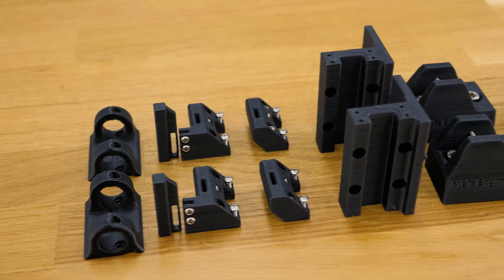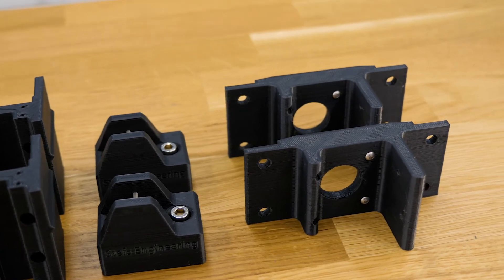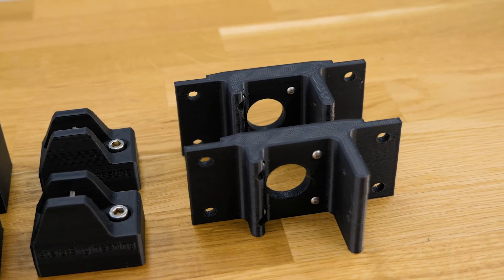Now first we are going to assemble the guide rail car blocks, the motor mounts and the pulley blocks. And when that's done, the next step will be to assemble the linear motion modules.